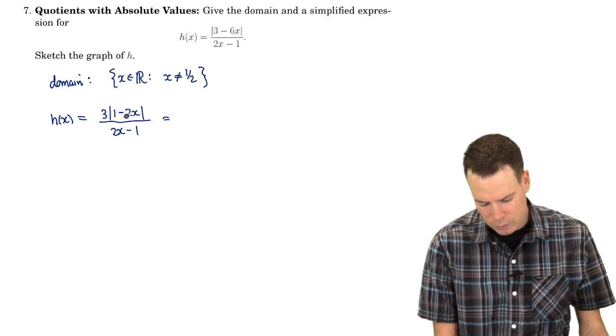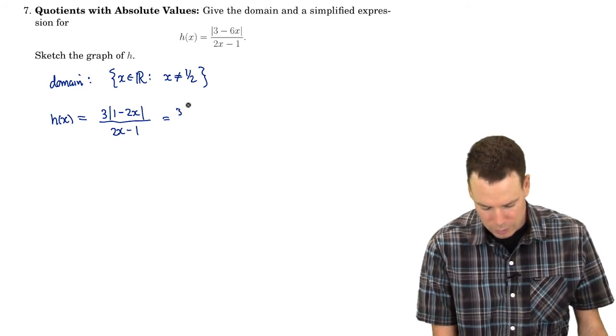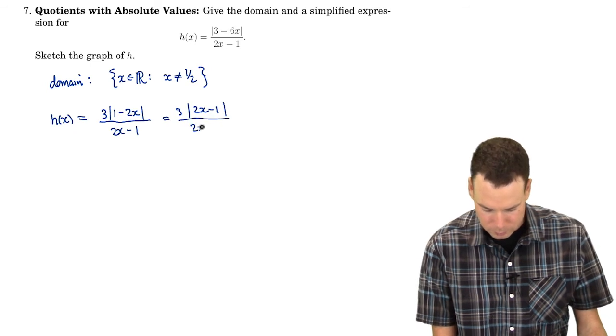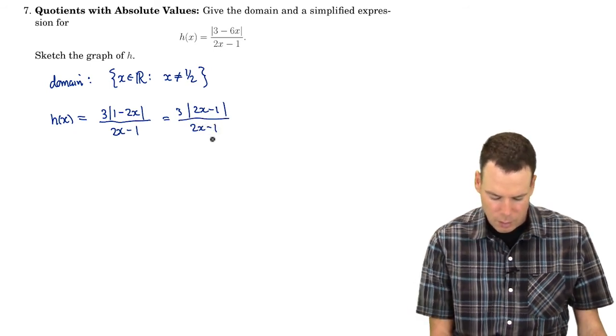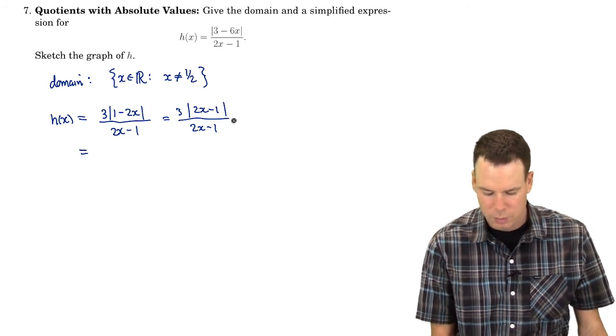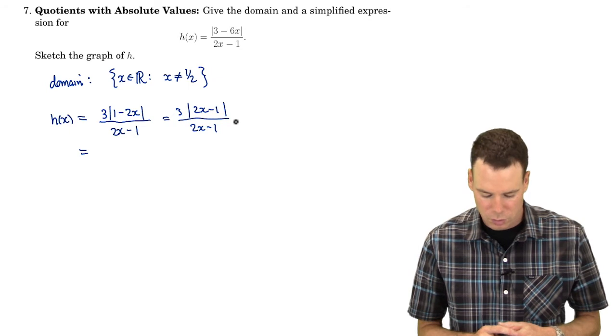I noticed that this absolute value of 1 minus 2x, well that's equal to the absolute value of 2x minus 1. I'm just switching their order.